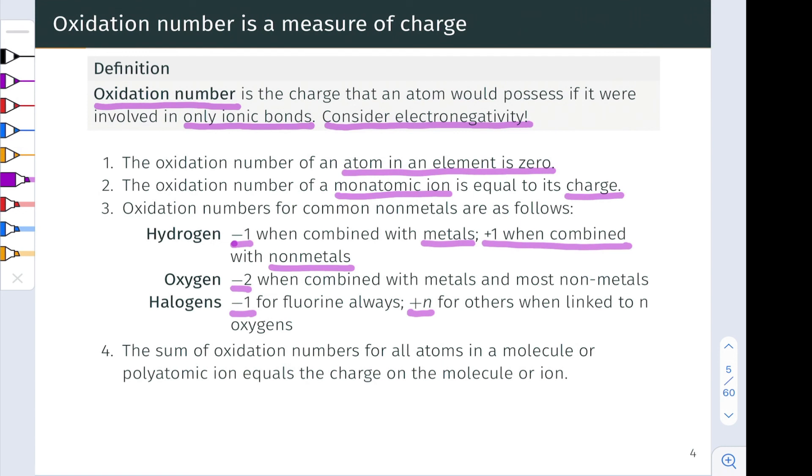Rule four says that the sum of oxidation numbers for all atoms in a molecule or polyatomic ion equals the charge of the molecule or ion. And this makes sense. It's just like formal charge, right? The total charge on all of the atoms needs to add up to the net charge of the molecule or ion.